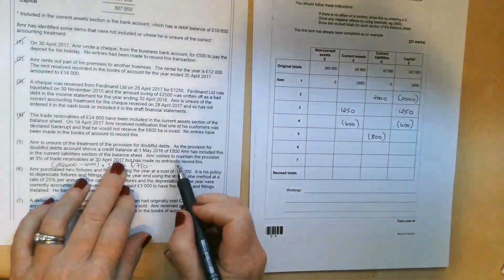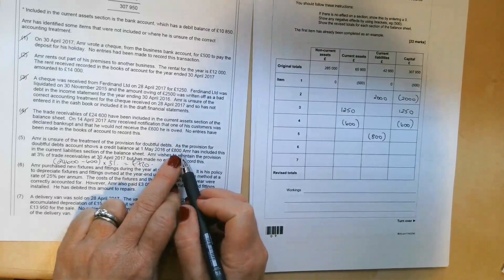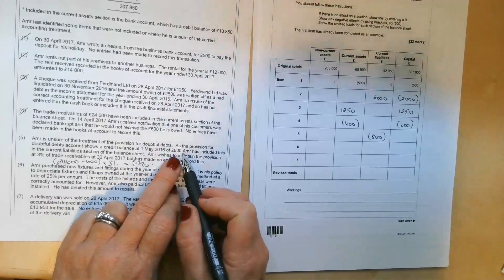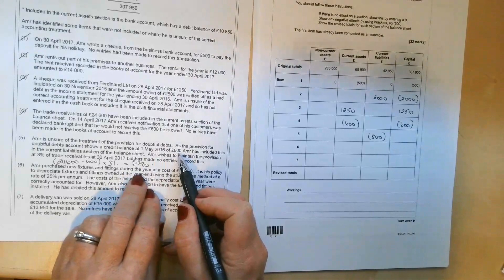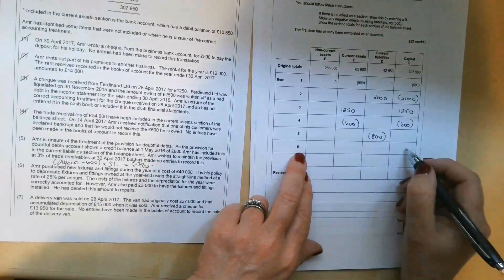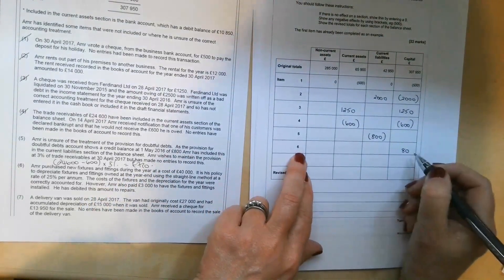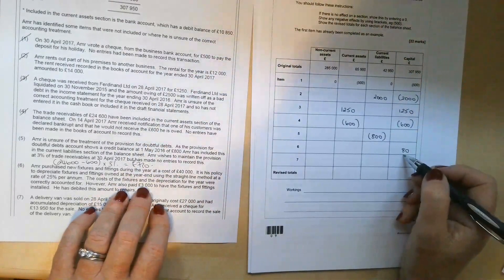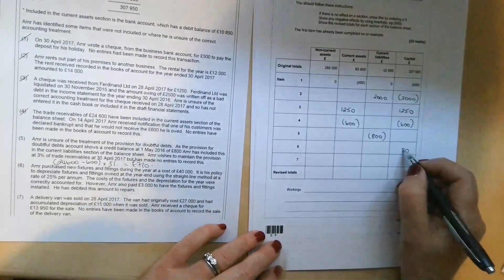But he's already got £800 in there. So we're going to need to reduce the provision for doubtful debts by the difference, £80. So that's going to go into the capital section. We're going to increase profit by £80. So we're going to add that to the capital section. Oh, I put that in the wrong place. Apologies.